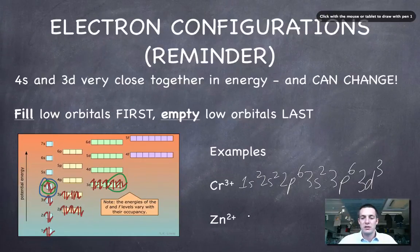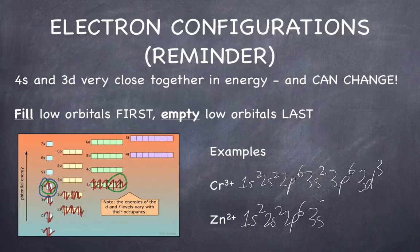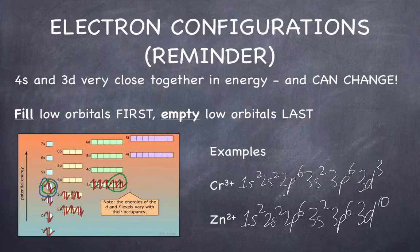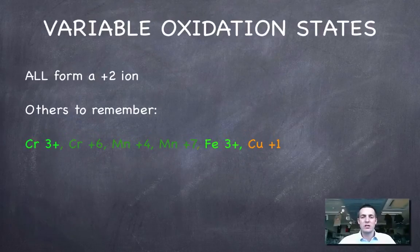And so zinc 2 plus ions would have an electron configuration of 1s2, 2s2, 2p6, 3s2, 3p6 and then finally 3d10. And in fact it's very unusual to see ions with any 4s electrons when we're going across this first row of the d block. That was a little bit of a reminder.